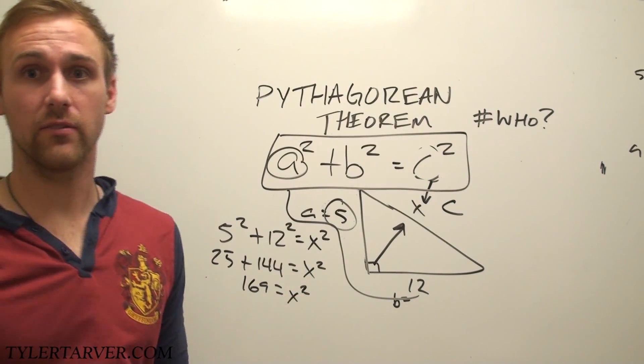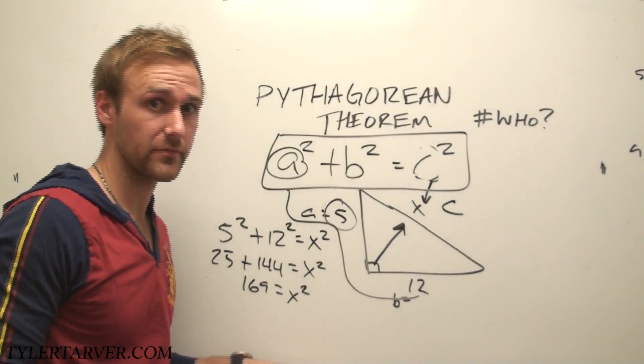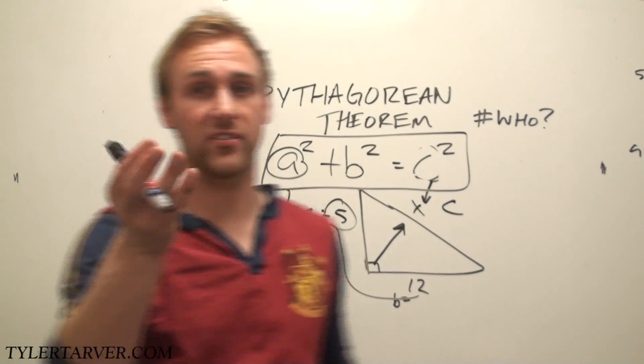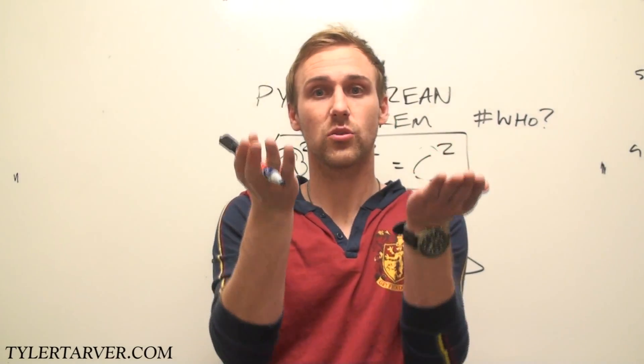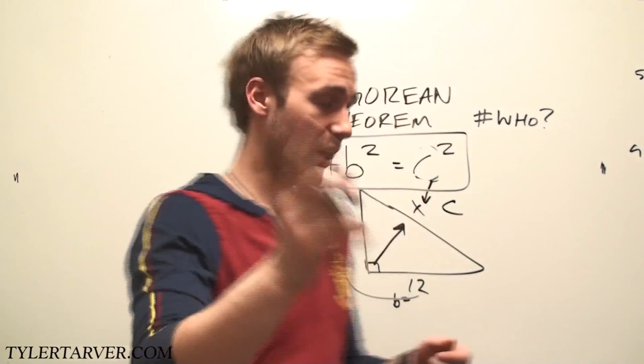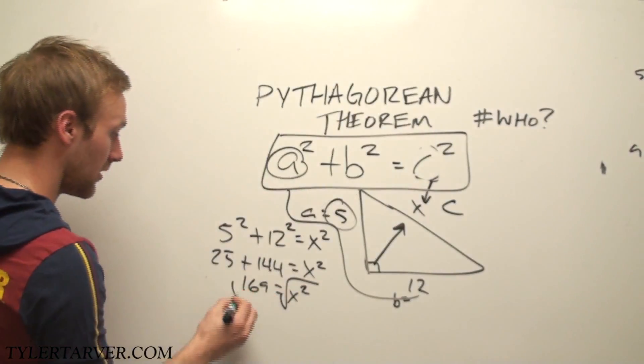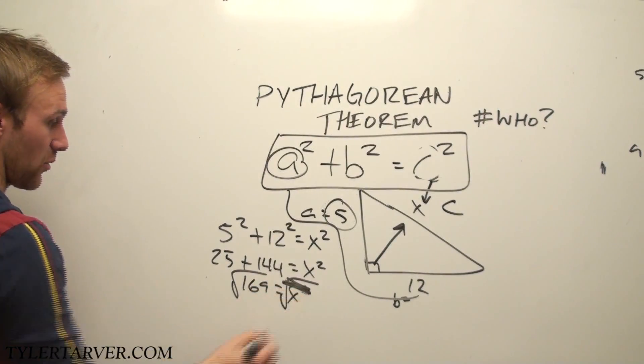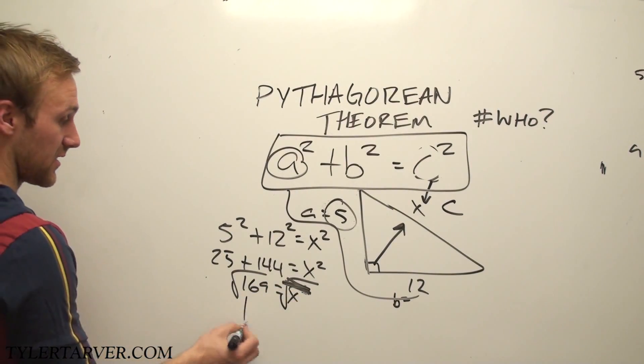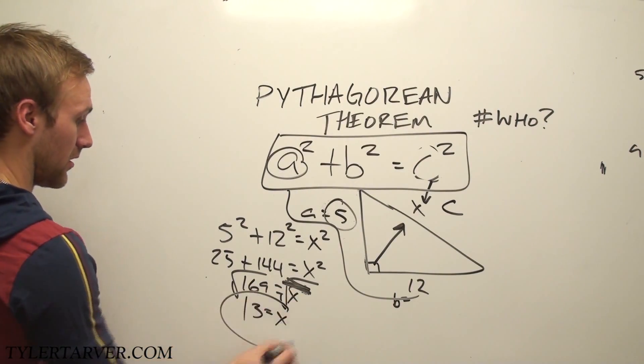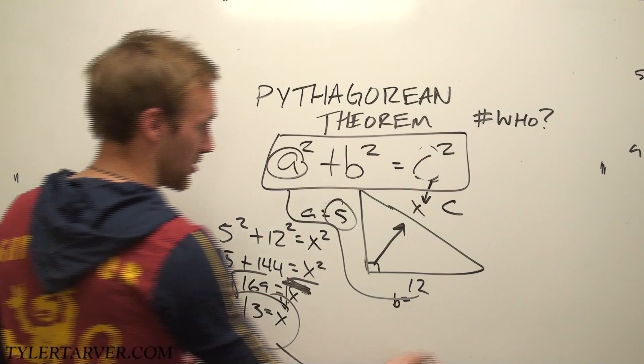Now what do you do to get rid of a squared? Opposite of squaring something, they have the same name: squaring, square root. So we're going to do the square root of both sides. That square root will cancel out that squared. Square root of 169 is 13. That means this measure is 13.